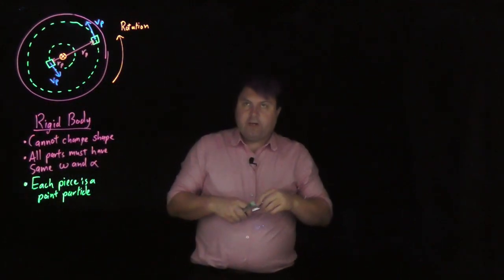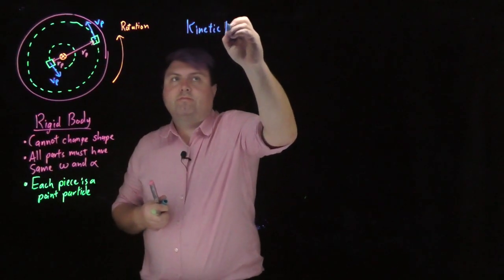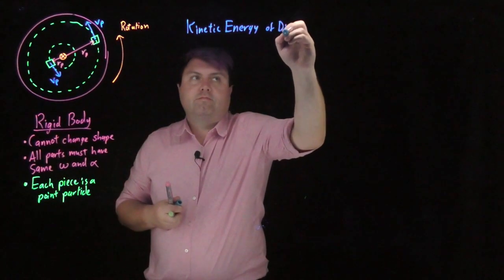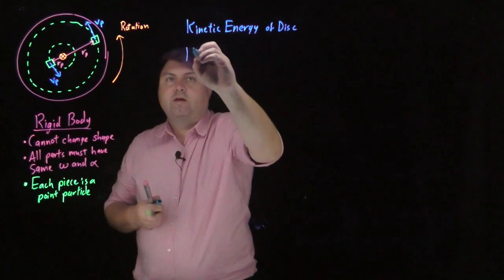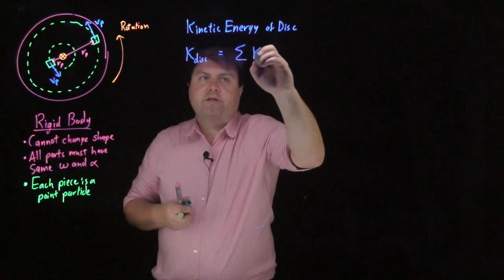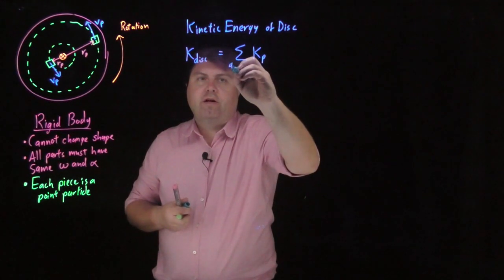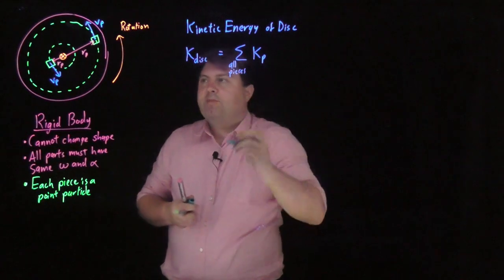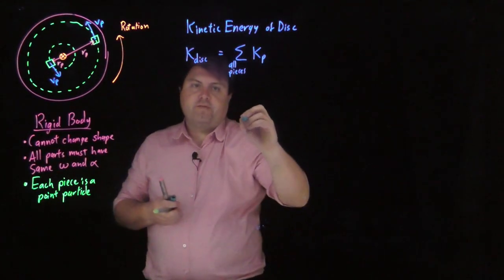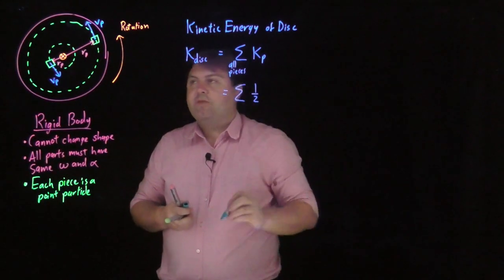So if we're looking at the kinetic energy of the disk, then the kinetic energy of the entire disk would be equal to the sum of the kinetic energy of each piece, if we sum over all pieces. So if we sum over all of these pieces, we would get the sum of the kinetic energy of each of these.